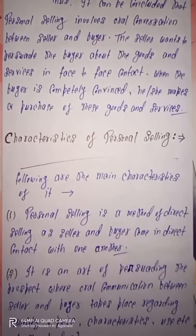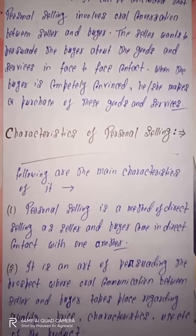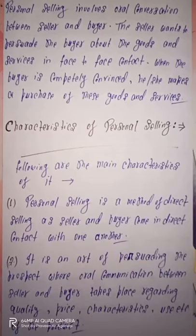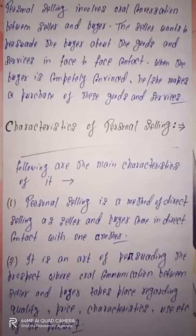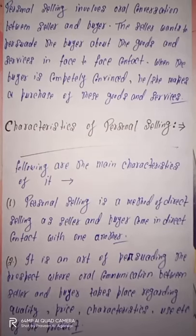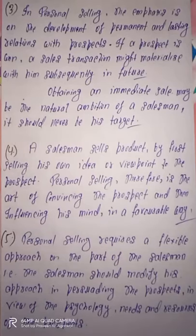The second feature is that personal selling is an art of persuading the prospect, where oral communication between seller and buyer takes place regarding quality, price, characteristics, and use of the product. Seller prospect ko persuade karne ke liye efforts karta hai, aur is oral communication mein seller buyer ko product ke quality, price, features, aur use ke baare mein batata hai, jisse buyer persuade hokar product purchase kare aur loyal customer mein convert ho sake.